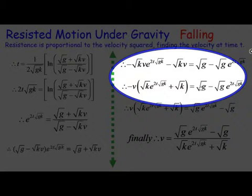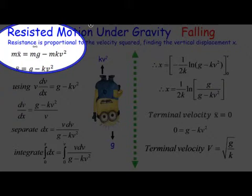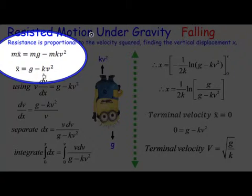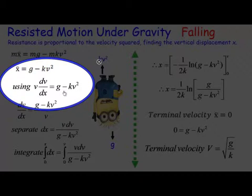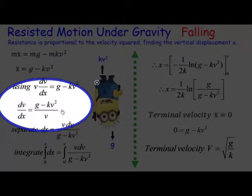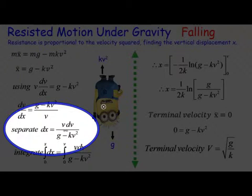We start off with the equations again. You can see here the mx double dot equals mg minus mkv squared, as you know because our unit is actually falling. We just get x double dot equals g minus kv squared. Now we use that the acceleration x double dot is equal to v dv/dx, and we then rearrange this eventually to separate the variables, obviously get dx on one side and the v's and dv's on the other side.